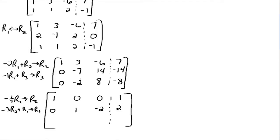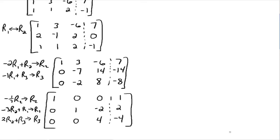We also want to make the negative two in row three a zero. Two times row two plus row three gives us a new row three. Two times zero is zero plus zero equals zero. Two times one is two plus negative two equals zero. Two times negative two is negative four plus eight equals four. Two times two is four plus negative eight equals negative four.